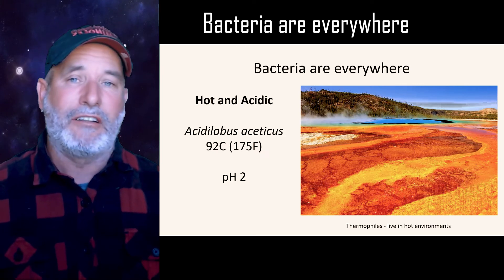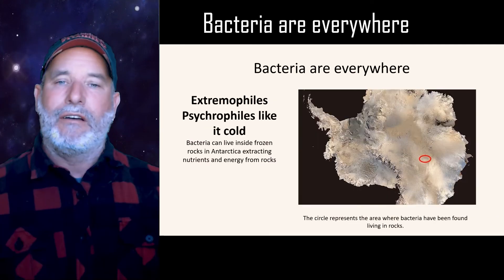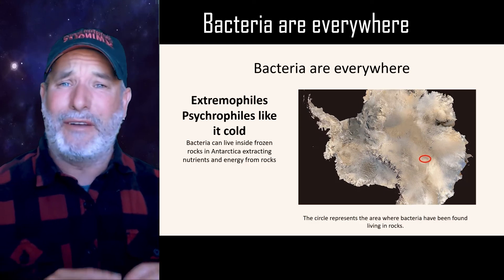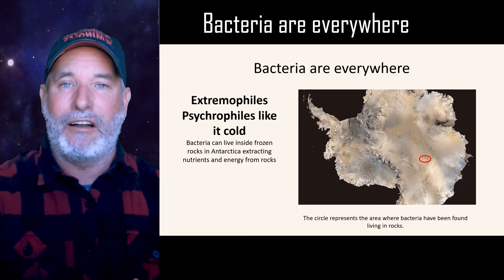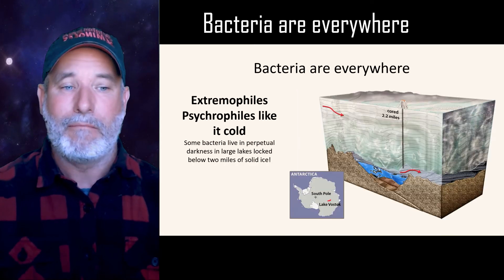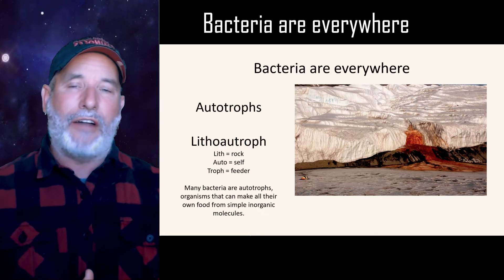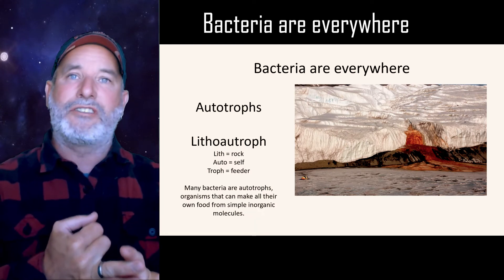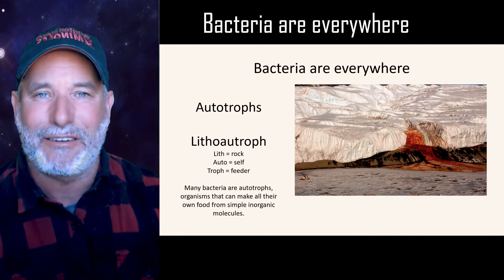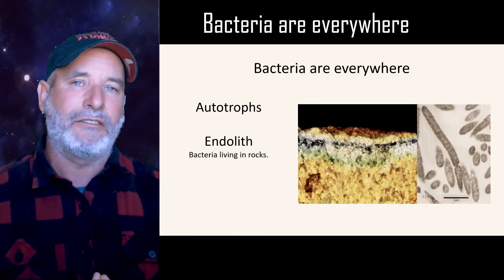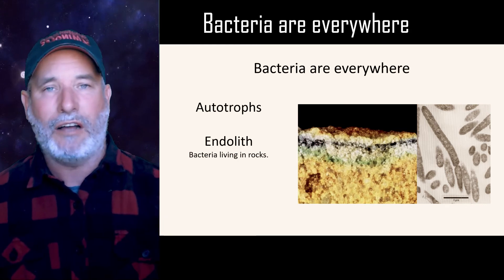Bacteria not only live in hot environments — they can live in very acidic environments, pH of two or even pH of one. There are bacteria that can live in battery acid. Or there are extremophiles called psychrophiles that love cold environments. In Antarctica, under two miles of solid ice, there are lakes where bacteria grow. There are also lithoautotrophs — 'litho' means rock, 'auto' means self, 'troph' means feeding — bacteria that literally extract energy by eating rocks, found even in frozen rocks at the bottom of McMurdo Bay.